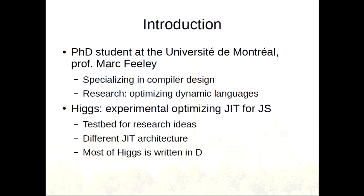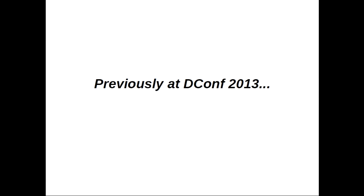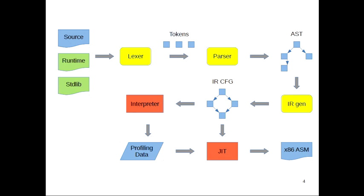I was there last year, and when I was here last year, I spoke a little bit about the architecture of HIGS, which at the time had a pretty typical pipeline kind of architecture where the source code gets parsed, then we get an AST, we generate an intermediate representation, then there was an interpreter, the interpreter generates profiling data, and then there's a second level of optimization where code gets JIT compiled into x86 machine code. So the architecture has changed quite a bit since.